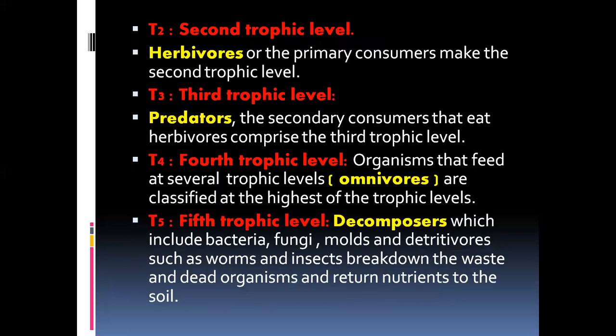T2, the second trophic level, includes herbivores, also called primary consumers. These are organisms that feed on producers — plants, algae, and bacteria. T3, the third trophic level, consists of predators or secondary consumers. They eat herbivores and comprise the third trophic level — predators use herbivores as their food source, so we group them in T3.